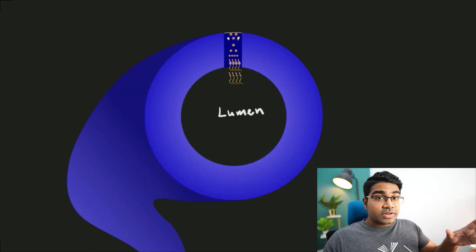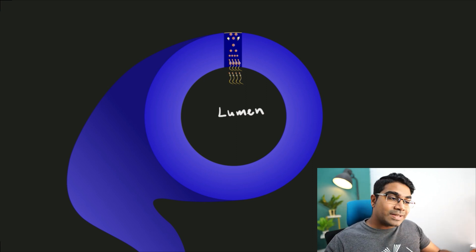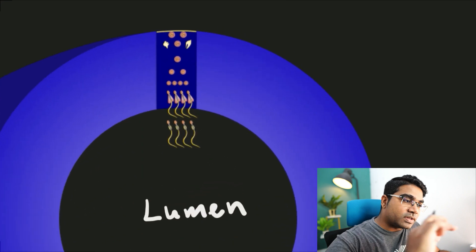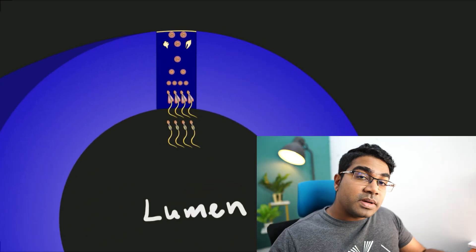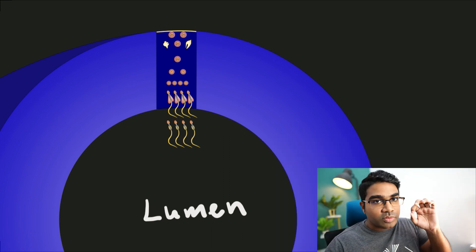Let's take a closer look at the seminiferous tubules. This is a cross section. The spermatogenesis process occurs in the walls of the seminiferous tubules. Once the sperms are produced, they gather in the lumen, the hole in the middle of the tubule.